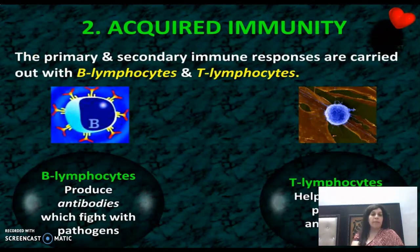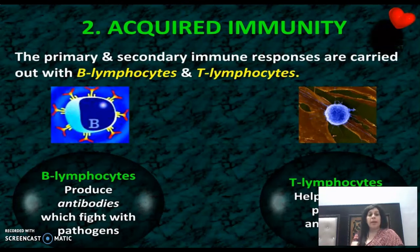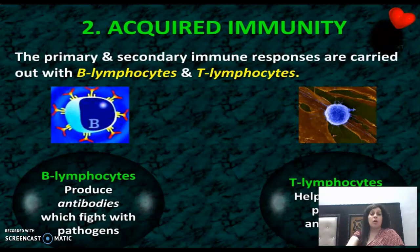Acquired immunity में primary and secondary immune responses B lymphocytes और T lymphocytes द्वारा carried out होते हैं। B lymphocytes antibodies produce करते हैं जो pathogens से fight करती हैं। Primary immune response तब होता है जब first time कोई antigen body में enter करता है और cells को response करने में time लगता है। लेकिन एक memory create हो जाती है, जिसकी वजह से अगर वही pathogen दुबारा attack करे तो B cells और T cells immediately response करते हैं।